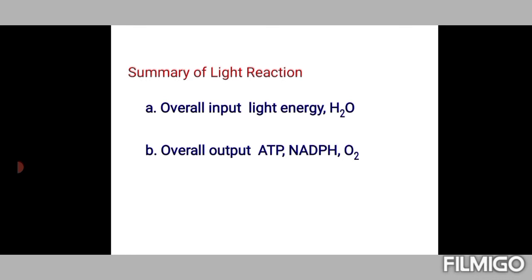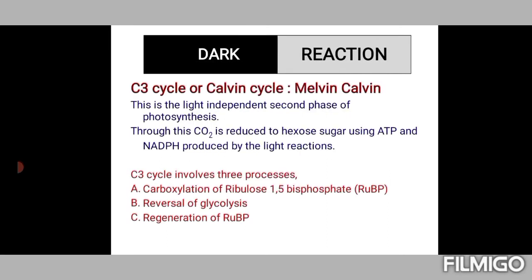ATP, NADPH and oxygen — the basic strategy followed by plants was that ATP and NADPH are produced during the light reaction, then they are used up during the dark reaction, also called the light-independent reaction. It is also called the C3 cycle or Calvin cycle: C3 cycle because the first stable compound formed during the dark reaction is 3-phosphoglycerate, a 3-carbon compound; and Calvin cycle because it was discovered by Melvin Calvin.